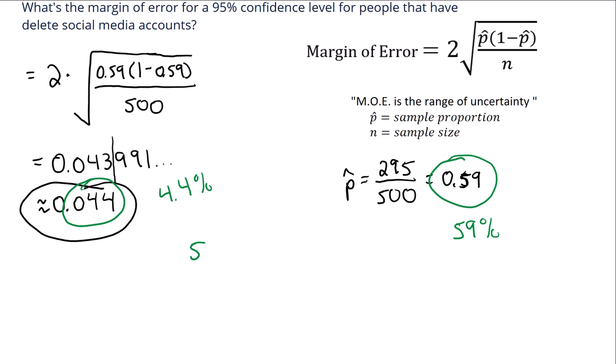And we'd also take 59% and add the 4.4%, and that would give our upper amount. So if we're subtracting, we'd be left with 54.6%, and if we're adding, that would be 63.4%.